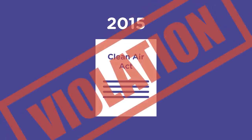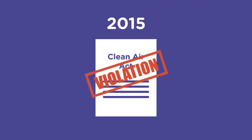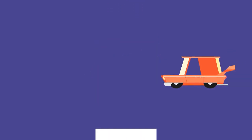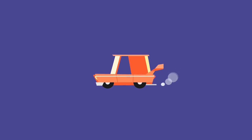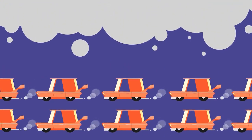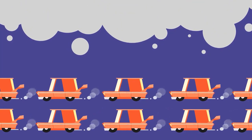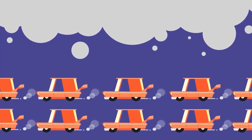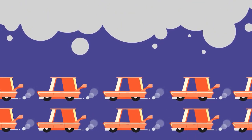In 2015, Volkswagen was issued a violation of the Clean Air Act in the United States. The Environmental Protection Agency discovered Volkswagen intentionally programmed diesel engines to activate their emissions control only during inspections. The cars appeared to pass air quality standards during testing, although they created up to 40 times the emissions in real-world driving. The software was placed in 11 million cars worldwide, leading to a massive increase in greenhouse gas emissions that contribute to climate change.